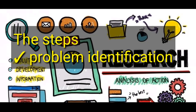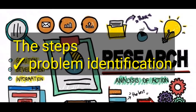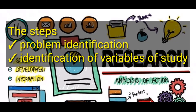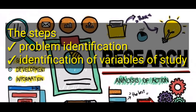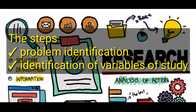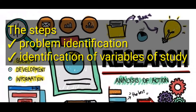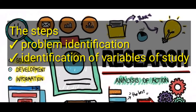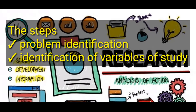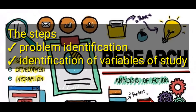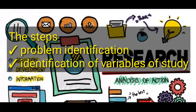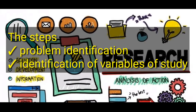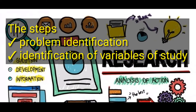The next step in the research process is identification of the variables of study. The variables of study are always two: we have the dependent variable and the independent variable. For example, if you found out that the performance of students is still low even though lecturers are teaching, you will have to find out which one is the dependent variable and which one is the independent variable.